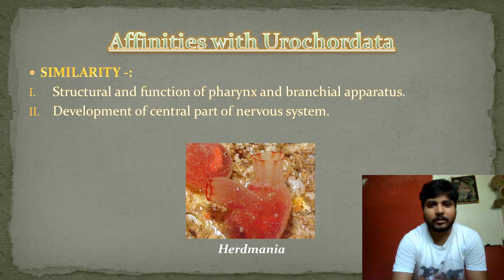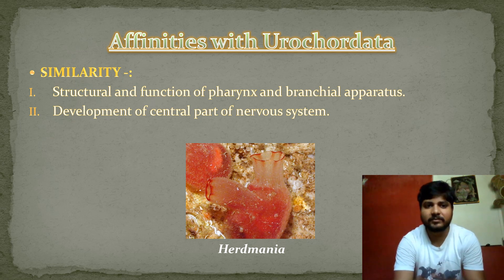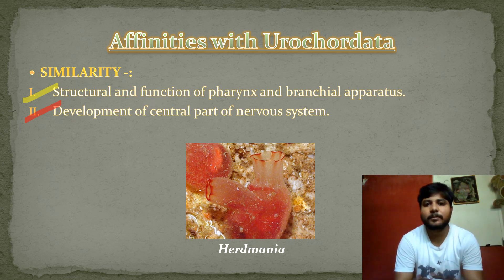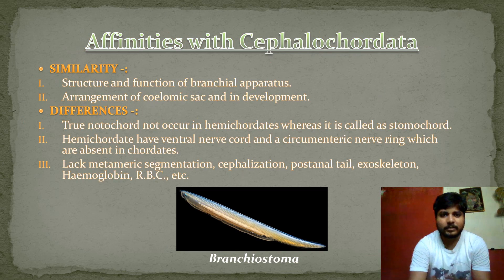Let's start with the first affinities with Urochordata. There are certain affinities or relations between Urochordata and Hemichordata. The similarities are: first, the structure and function of the branchial apparatus; and second, the development of the central part of the nervous system, which is quite similar in both. An example of Urochordate is Herdmania.